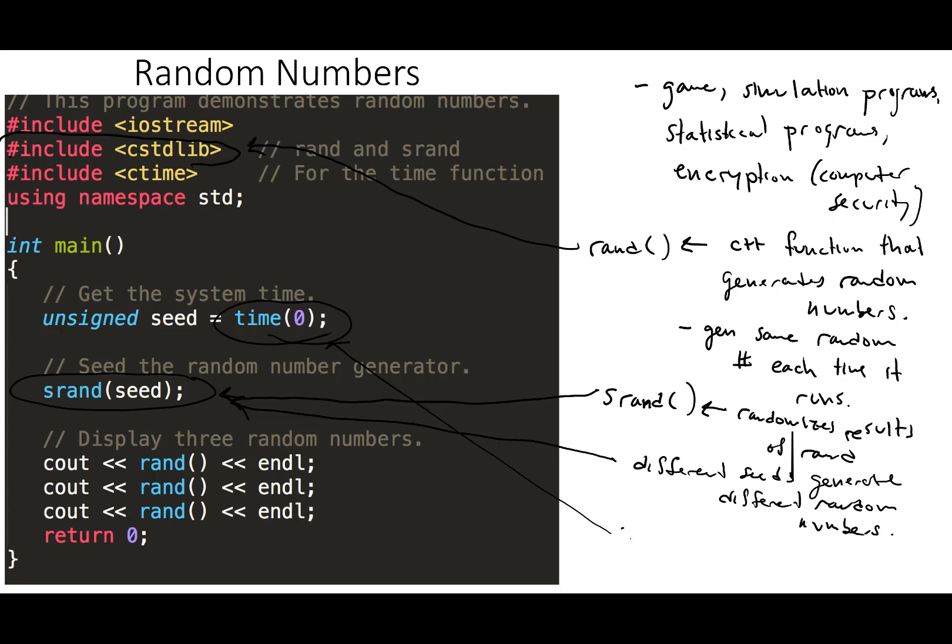And you're going to pass zero as an argument. If you want to use this time function, you have to include the ctime header file. So the cstdlib is for rand and srand, and the ctime is for the time function.